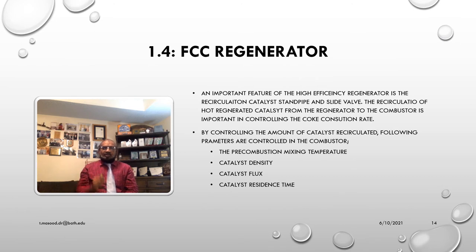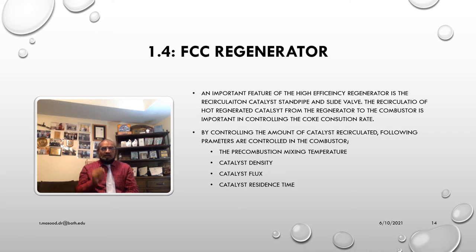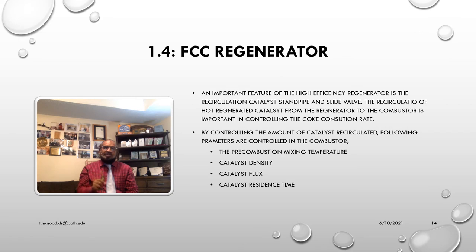The recirculation slide valve position is controlled by a temperature controller or density controller. The regenerator pressure is indirectly controlled by operating the flue gas slide valve from a controller which measures the differential pressure between the reactor and the regenerator. By using a PDIC, the effect of fractionator suction pressure surges on catalyst circulation is minimized. The reactor-regenerator differential pressure is generally chosen to roughly equalize the differential pressure across the catalyst slide valves. In case the pressure in the regenerator becomes too high, the regenerator pressure controller sends a signal to a high signal selector switch to open the slide valve.